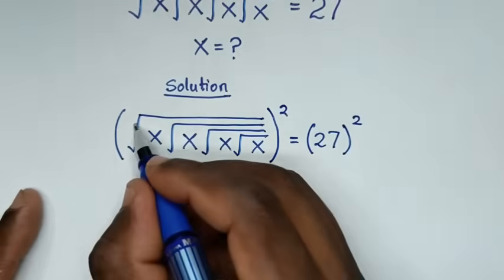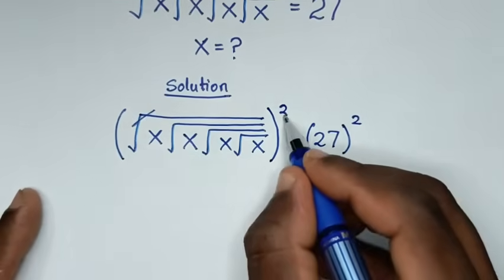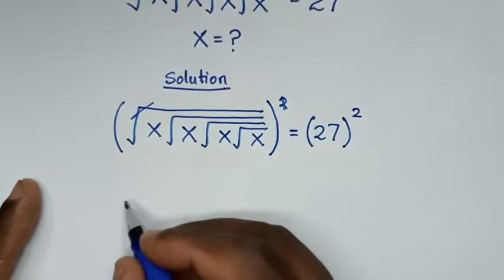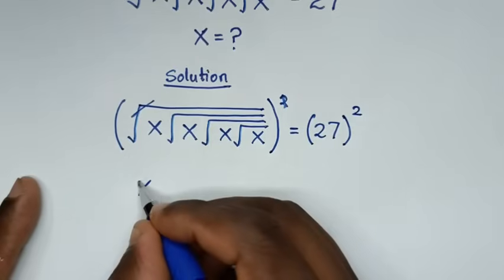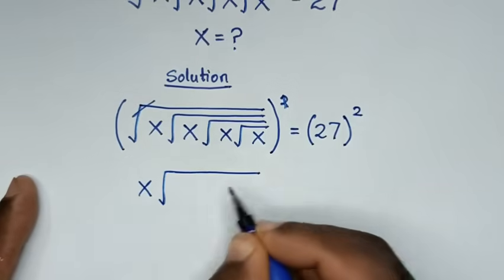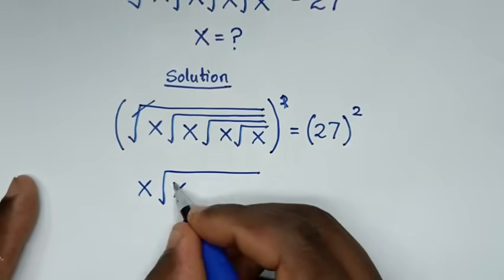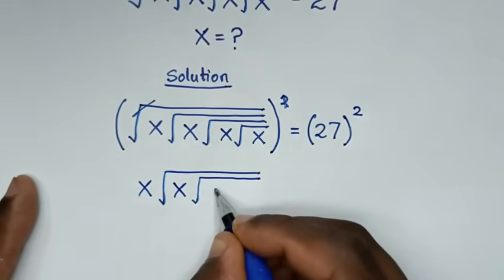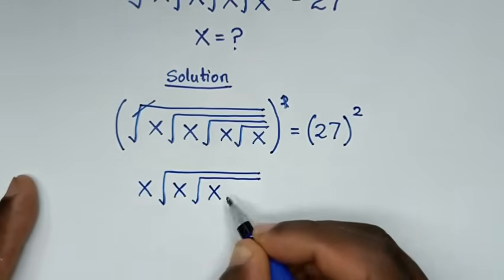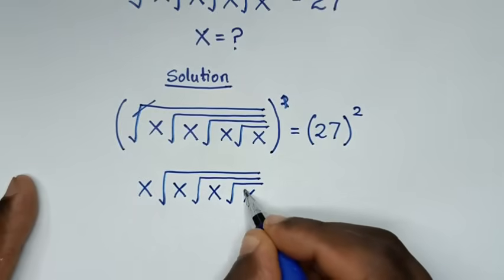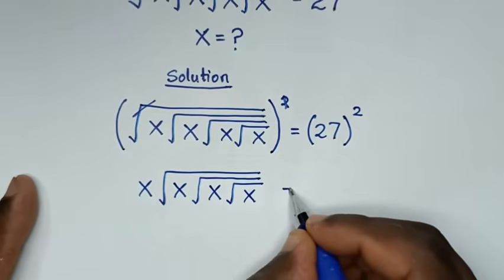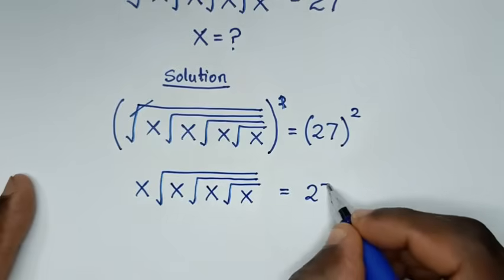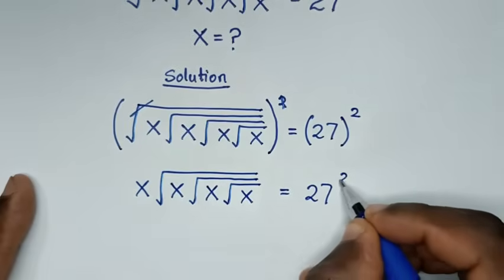So this square root here will cancel the square. Then it will be x times square root of x under square root of x under square root of x, is equal to 27 squared.